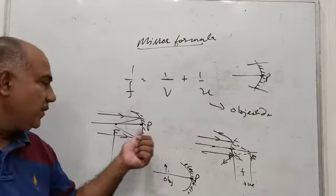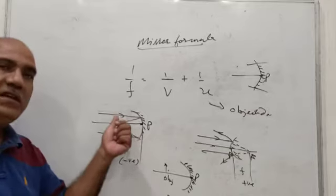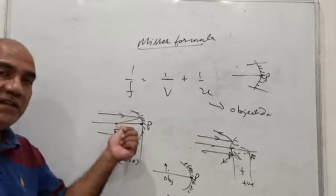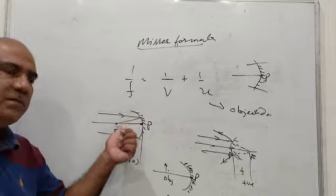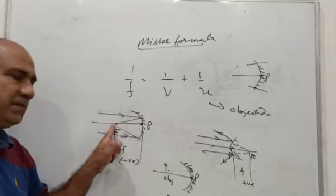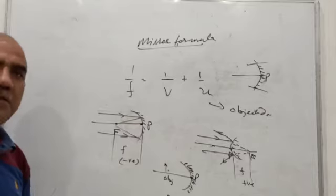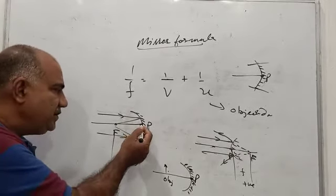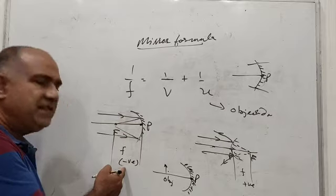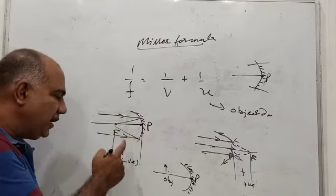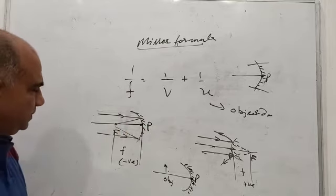In case of a concave mirror, the principal focus is the point on the principal axis to which all light rays that were initially parallel and close to the principal axis converge after reflection. The distance between the principal focus and the pole is the focal length. As per sign conventions, any point lying to the left of the pole is assigned a negative sign, so the focal length of a concave mirror is always negative.